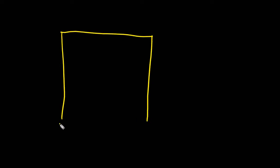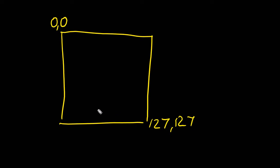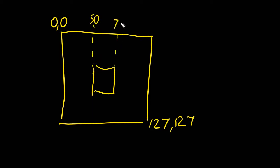Drawing a map on the PICO-8 screen is a really useful way of getting a background, and there are a lot of effects you can do once you've mastered how to get a background onto the screen. Remember that the PICO-8 screen runs from 0,0 at the top to 127,127 at the bottom. The center of the screen is always 63,63.